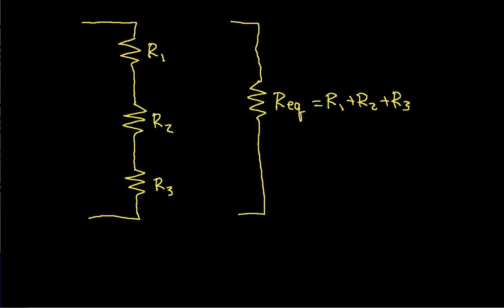Okay, so if I have four resistors in series, then the equivalent resistance is just the sum of the four resistances. So there you have it. Working with series resistors is actually very easy.